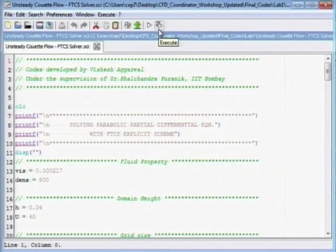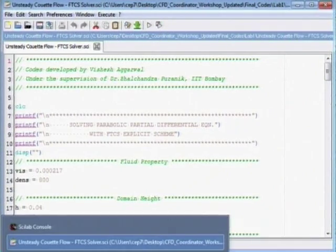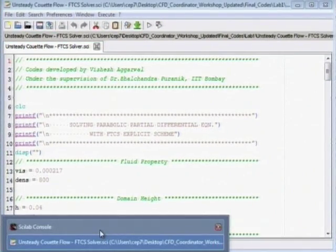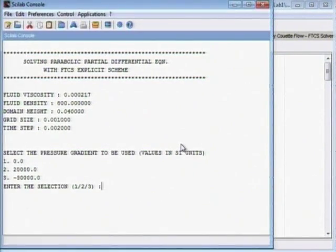Once you press that, at the bottom you'll find the console window. So just go to the console window. Here you'll find that the properties that had been hard-coded show up on the screen.